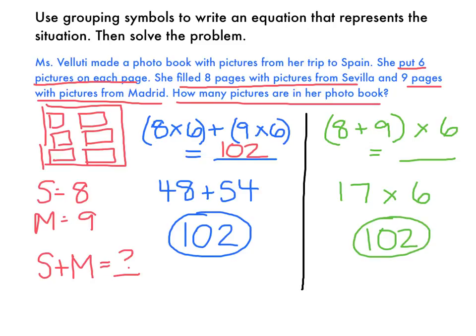So no matter what, we know that she is going to be having 102 total pictures in her photo book. These two equations mean the same exact thing, it's just two different ways of representing this situation. As you can see, you need to think a little bit about the story problem, and what's happening in the story problem, in order to help you write the equation and think about what operations are involved, but then you also need to think about how grouping symbols could impact your solution. I hope you learned a lot today. Thanks so much for watching.